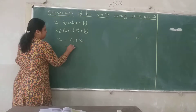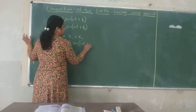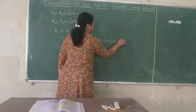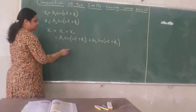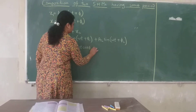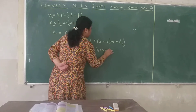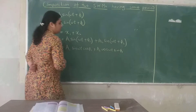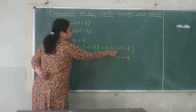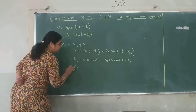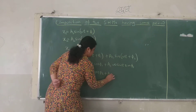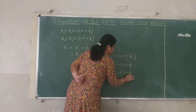Now I will substitute the equations. X₁ = A₁ sin(ωt + φ₁) and X₂ = A₂ sin(ωt + φ₂). We will expand using the formula sin(A + B) = sin A cos B + cos A sin B. Expanding X₁ gives A₁ sin(ωt) cos φ₁ + A₁ cos(ωt) sin φ₁. Expanding X₂ gives A₂ sin(ωt) cos φ₂ + A₂ cos(ωt) sin φ₂.